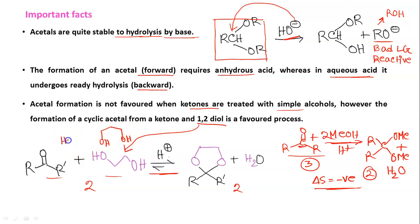In general, 1,2-diols or 1,3-diols are used because if the two OH groups are farther apart (1,4 or 1,5), the reaction is not favorable. In the next video we will discuss more important facts about acetal formation using examples, and the synthetic importance of acetal formation in synthesis. If you find the video helpful, please like, share, and subscribe. Thank you for your time.